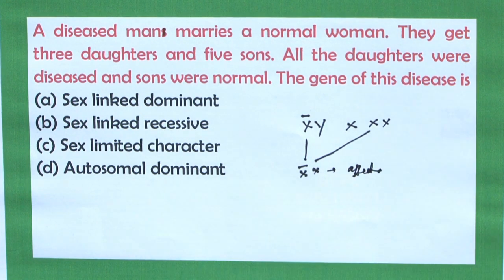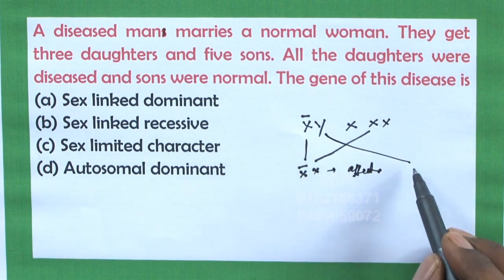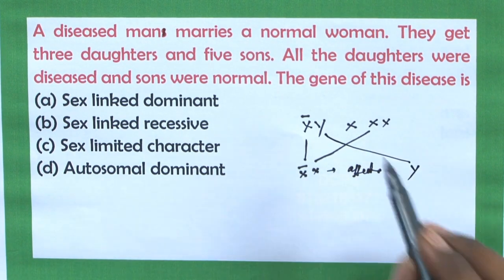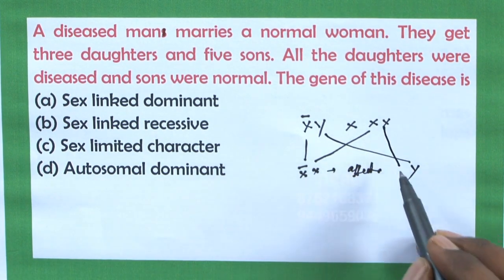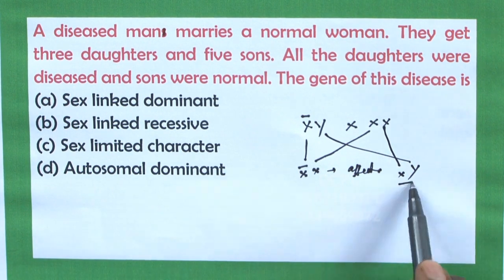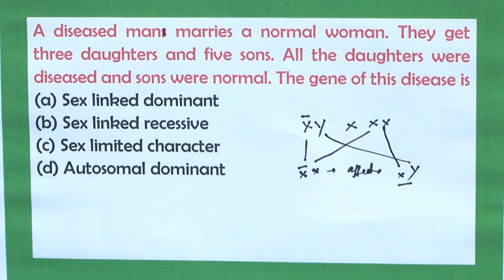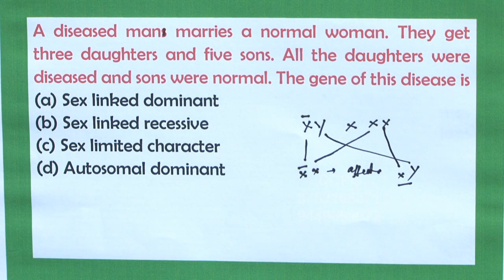Whereas the sons receive the Y chromosome from the father and one X chromosome from the mother, and the son will be normal. When you see the options: option A, sex-linked dominant; option B, sex-linked recessive; option C, sex-limited character; option D, autosomal dominant.